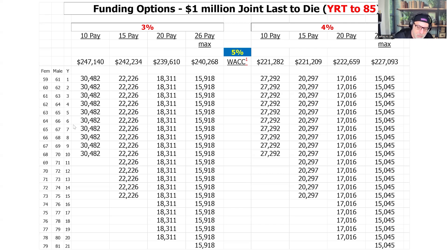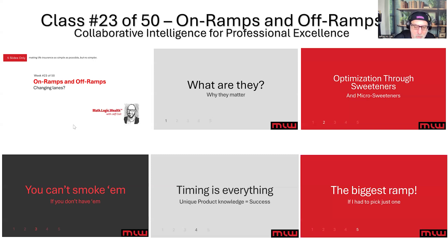We're now transferring credibility from the client's accountant to the advisor by doing it this way. On-ramps and off-ramps prove why life insurance requires different thinking. This class is subtitled 'Collaborative Intelligence for Professional Excellence' — and that's what it's going to take. All our futures are tied to this. We've covered limited windows, product-specific strategies, timing being critical, and evolving sweeteners that create complexity requiring collaborative intelligence. Next week: product rankings based on weighted criteria. Together, we know virtually everything. This collective approach represents the future of professional life insurance advice.